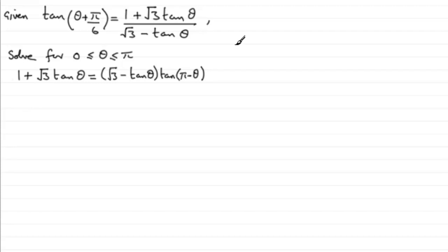Well, can you see that it does look similar? We've got 1 plus root 3 tan theta here, in both the equations. But if I was to divide both sides by root 3 minus tan theta, I would create the right hand side of this equation. And that's how I'm going to relate this equation back to what we've discovered earlier.